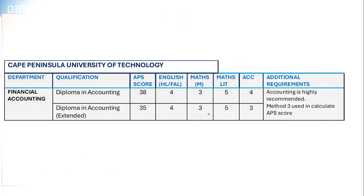Possible jobs if you do a diploma in accounting include bookkeeper, accounting technician, and cost accountant. Here's another example — remember, different universities have different requirements. For CPUT you also need accounting: code 4 for accounting, or code 5 if you do math select, code 3 for maths, and code 4 for English. Their AP score is calculated differently; you need a 38, or if you're in an extended program you only need 35.